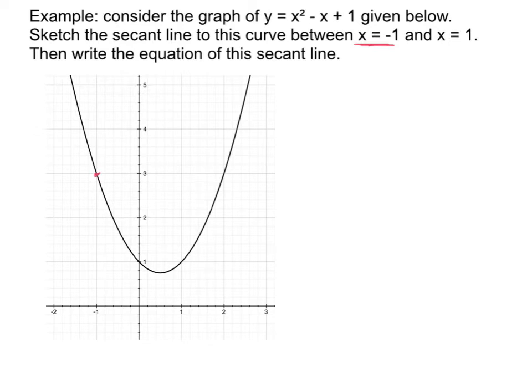How else could we have gotten 3? We could also have gotten that by plugging it into the function, by saying y equals negative 1 squared minus negative 1 plus 1. And when we simplify that, we're going to end up finding out that y is 3, which shows that the point was negative 1 comma 3.